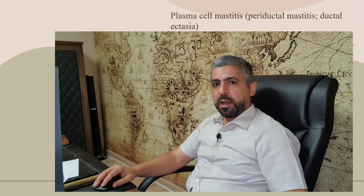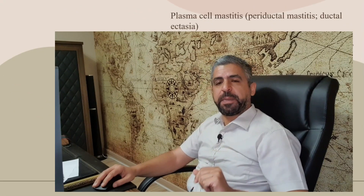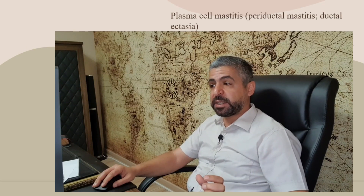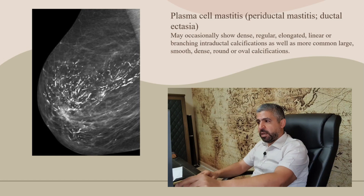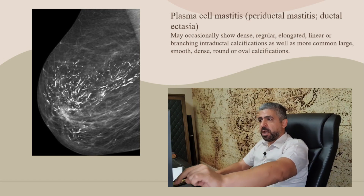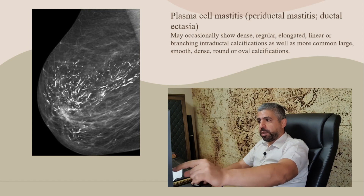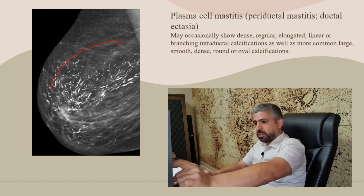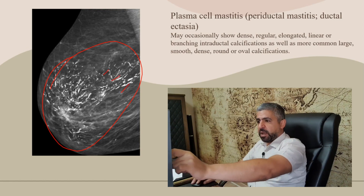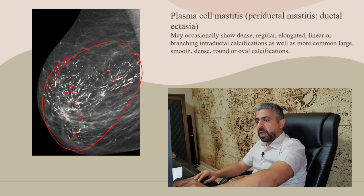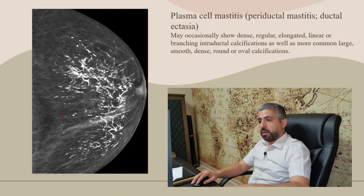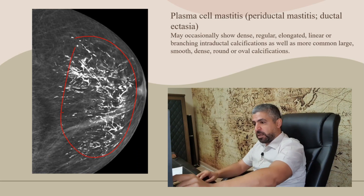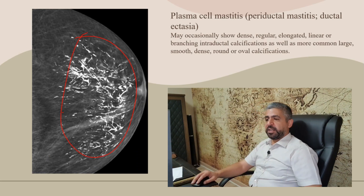Now, the last and most distinguished pattern of breast calcification is plasma cell mastitis, also called periductal mastitis or ductal ectasia. It may occasionally show dense, regular, elongated, linear or branching intraductal calcifications, as well as more commonly large, smooth, dense, round or even oval calcifications. As you can see here, this is a typical pattern of plasma cell mastitis — this is what's called a 'broken needle' appearance. These are the most common patterns of plasma cell mastitis, and here you can see another example that is very typical of plasma cell mastitis.